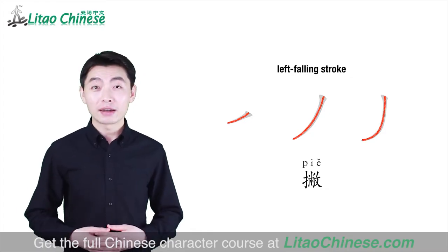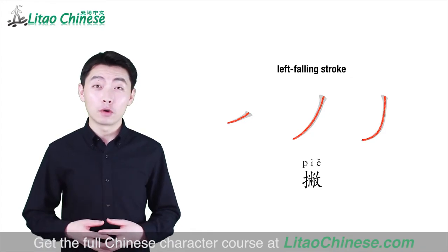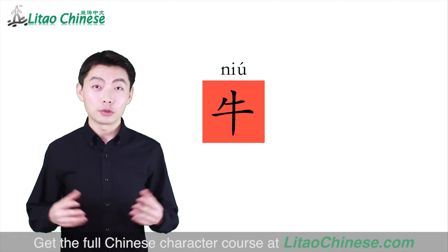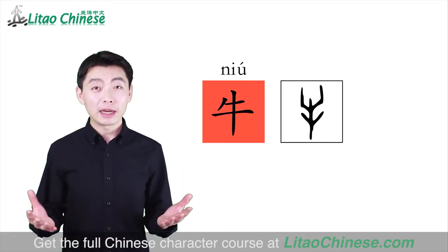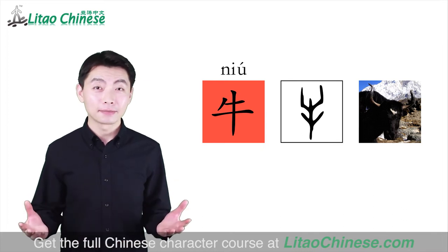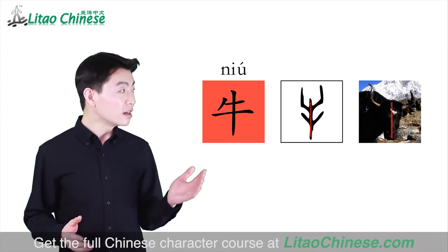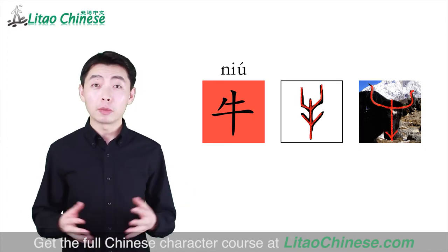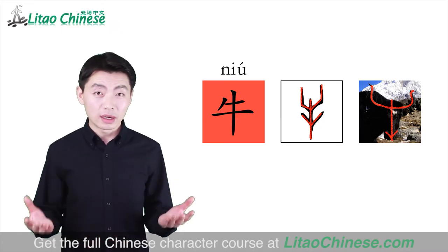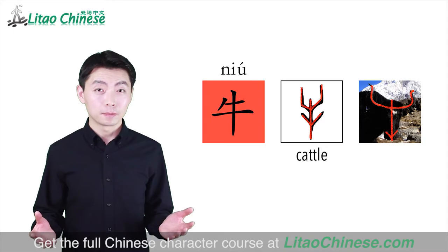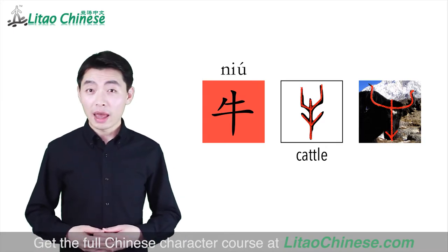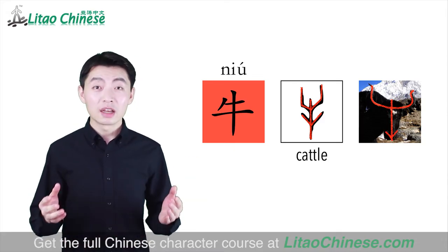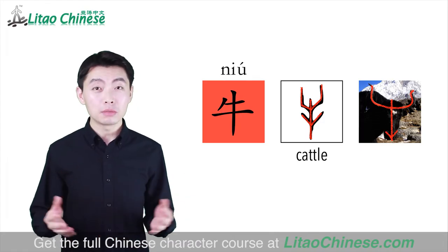Now let's look at some characters which have this left-falling stroke 撇. This character is 牛. It's originally written like this — made by drawing the rough shape of an ox's head. You can see here is the head, the horns, and the nose. Ancient Chinese people created this character to represent cattle. You can't find the horns and the nose on the current version of 牛, but the meaning doesn't change. It still means cattle.